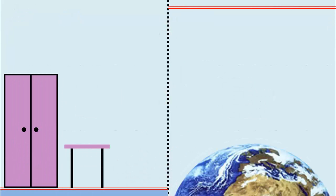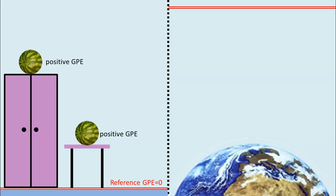When dealing with everyday objects, we use the lowest point as the reference point, so GPE at height zero is zero, and GPE everywhere else is positive.